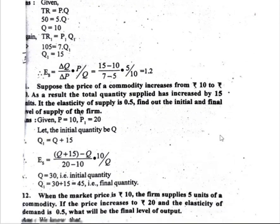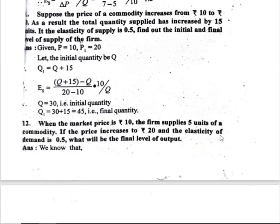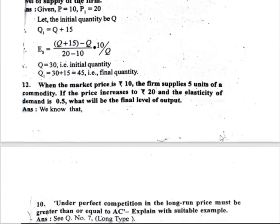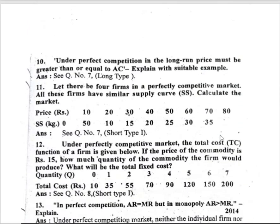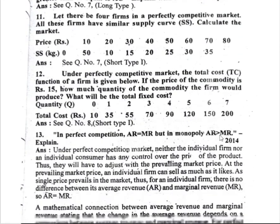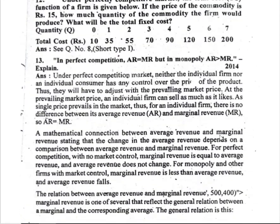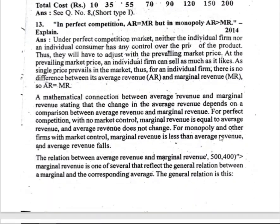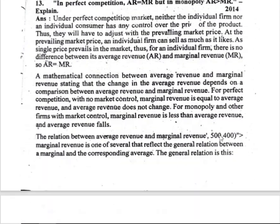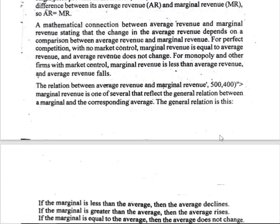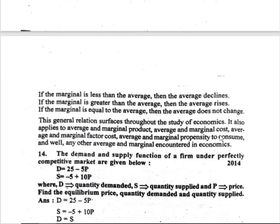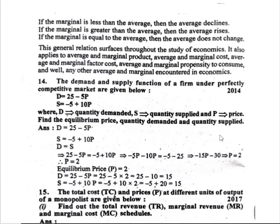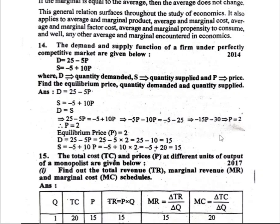Questions 10, 11, 12, 13, 14, and 15 are all important for Chapter 4 — theory of the firm under perfect competition.